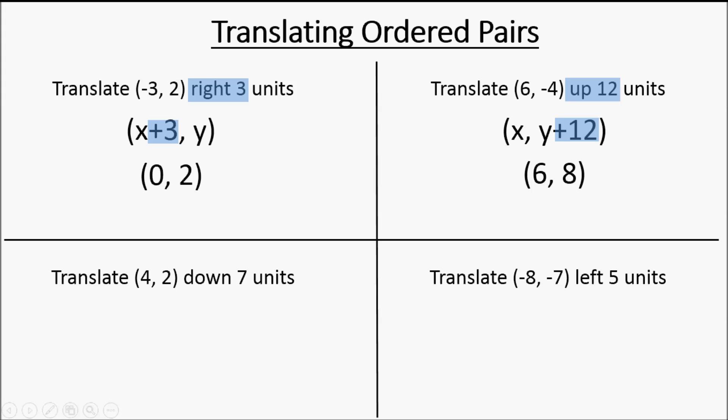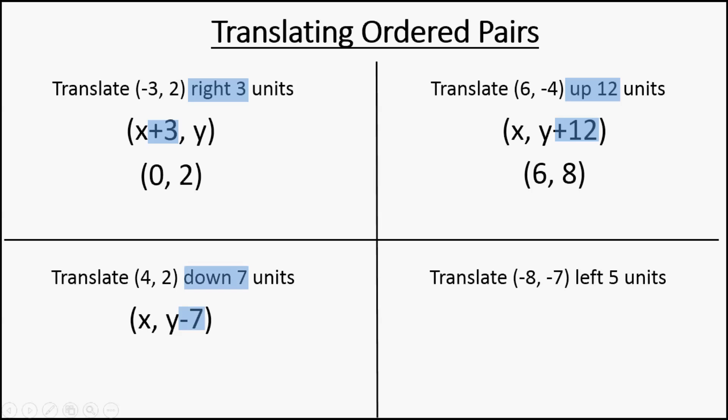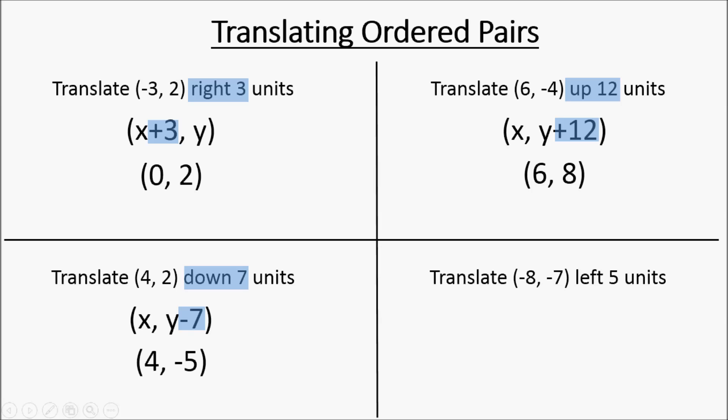We're looking at the bottom left one now, translating four comma two down seven units. Moving something down is going to be a change in y, and downward is a negative direction. So x is going to stay the same — x is still going to be four — and then you put in a two for the y. Two minus seven is going to be negative five. So your new location for that point is four, negative five.